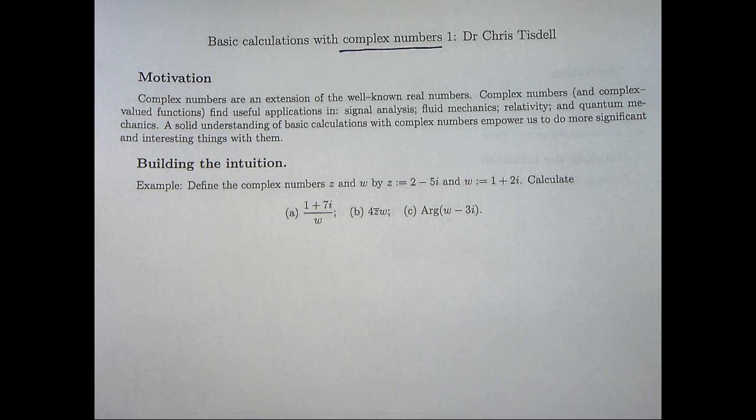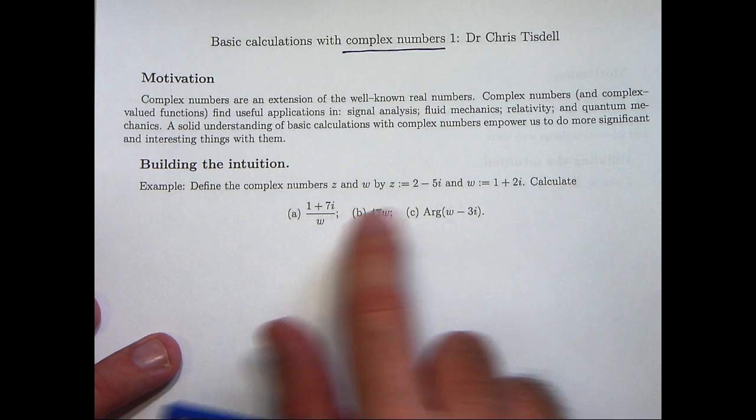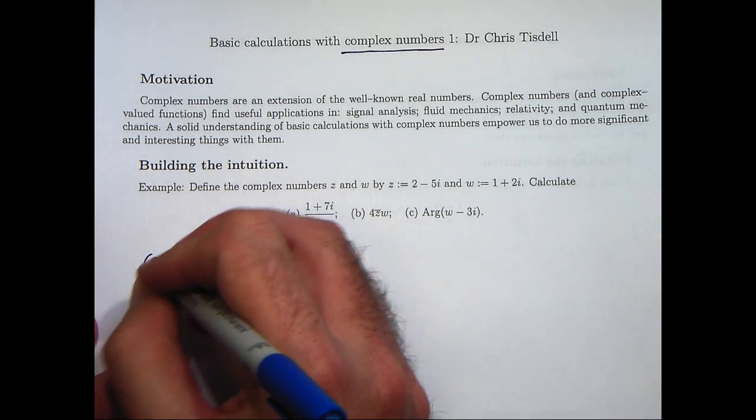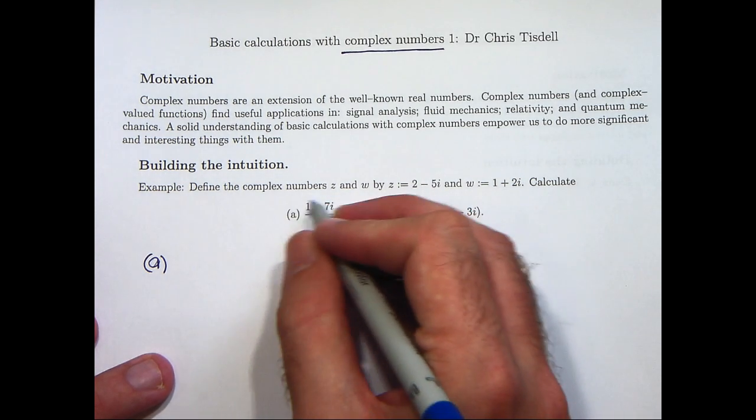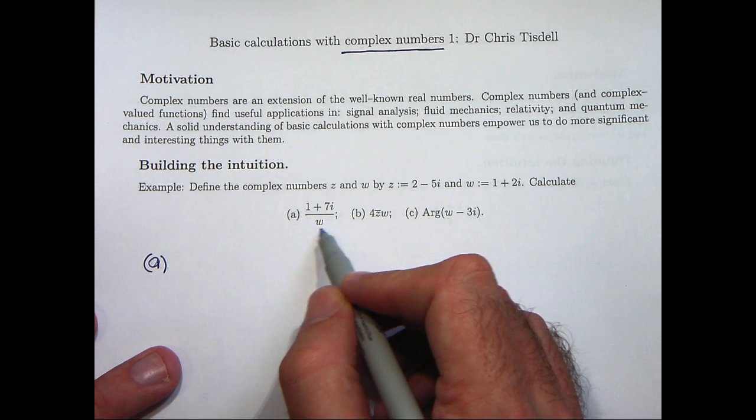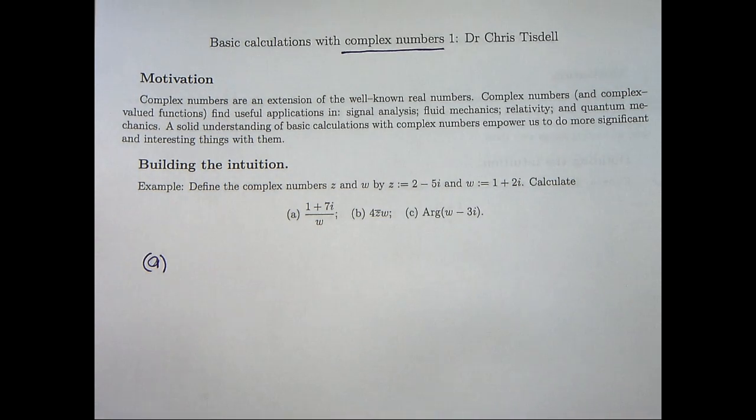Okay so let's get down to our example. Let's build our intuition a little bit. Here we've defined two complex numbers z and w in the following way and we want to calculate these three expressions or simplify them. In the first case we have the division of one complex number by another complex number. What we would like to do is get this denominator to become a real number. That way the whole expression is simplified and we can for example plot it very easily on an Argand diagram. So how do we do that?